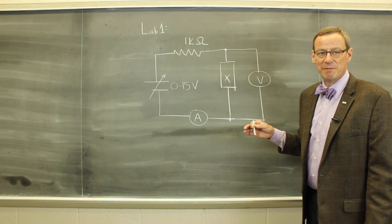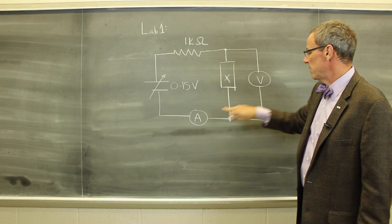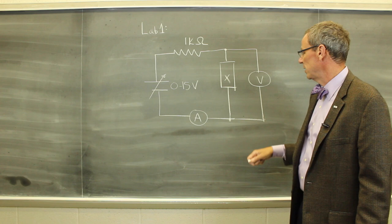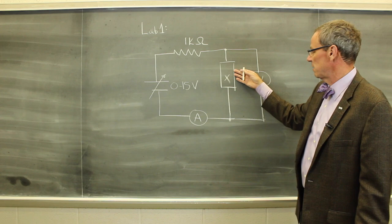In lab one, we're going to be measuring the IV curves of various components, indicated here by X. We have this circuit with a variable DC power supply, a one kilohm resistor to protect the circuit, a voltmeter to measure the voltage across the component, and an ammeter to measure the current through the circuit. We'll map out the voltage and current across the component as a function of what we set the voltage at, to produce the IV curve.